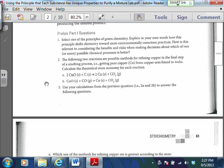So now the pre-lab question. It says select one of the principles of green chemistry, explain in your own words how this principle shifts chemistry toward more environmentally conscious practices. I don't need to read all this for you. Number one, I'm going to leave to you because you're basically just choosing one of the 12 principles and you're talking about it.